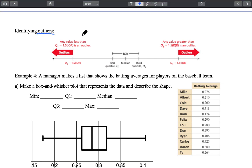So the calculation to identify outliers goes like this. We are going to first find the interquartile range. That's the IQR.